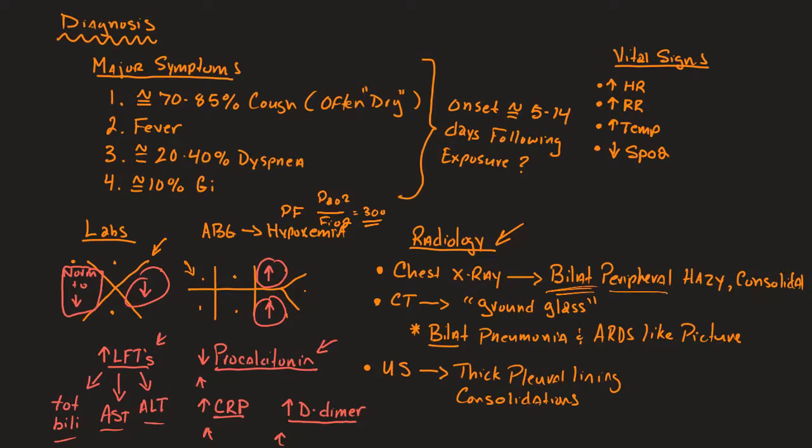The periphery tends to be impacted significantly. So bilateral, peripheral, hazy, consolidated areas. You can get air bronchograms as well. And this is bilateral. This is not like your classic unilateral lower lobe pneumonia that then gets worse over time. These patients tend to have bilateral pathology when it comes to radiology.